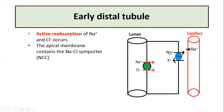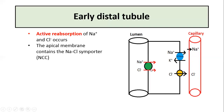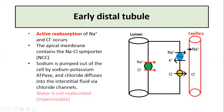The sodium which has entered the cell moves out through the sodium-potassium ATPase pump present on the basolateral membrane. Chloride which has diffused into the cell moves out into the bloodstream or into the interstitium through the chloride channel present on the basolateral membrane. This segment of the distal tubule is impermeable to water and causes the dilution of the tubular fluid as solute is reabsorbed without water reabsorption.